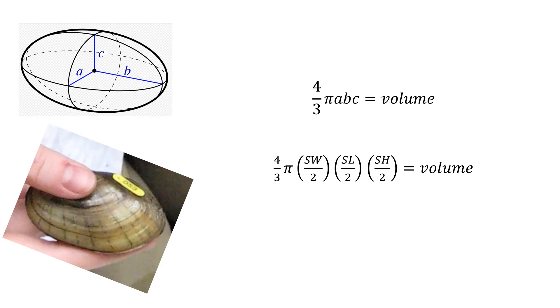And, of course, that's four-thirds pi times A, B, C. And in our terminology, the shell width divided by 2 is A, and the shell length divided by 2 is B, and the shell height divided by 2 is C. So what I'm going to do is combine all of those linear measurements into that one ellipsoid volume measure.